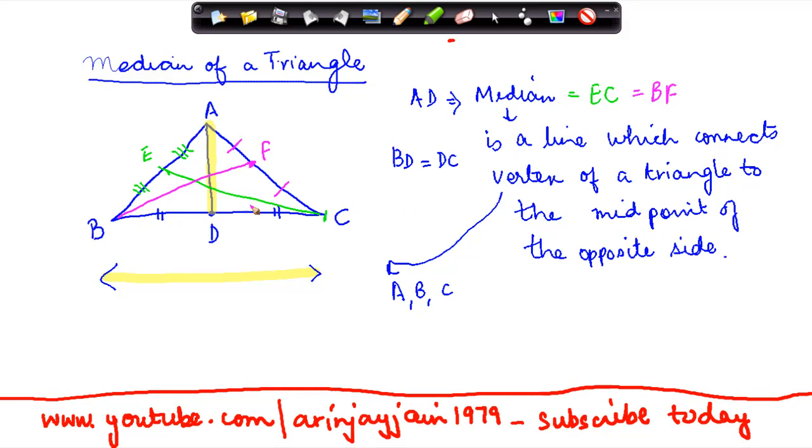So therefore, a triangle can have three medians. So there can be three medians in a triangle. And what is a median? A median is a line which connects the vertex—vertex ABC are the vertices of a triangle—to the midpoint of the opposite side.